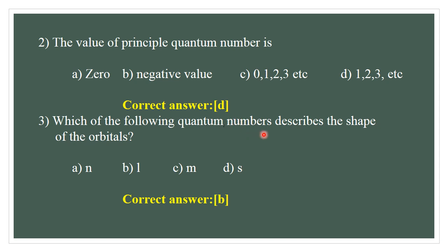Which of the following quantum numbers describes the shape of the orbital? Options: A) N — Principal quantum number, B) L — Azimuthal quantum number, C) Magnetic quantum number, D) Spin quantum number. The azimuthal quantum number decides the shape of the orbital. The correct answer is B.